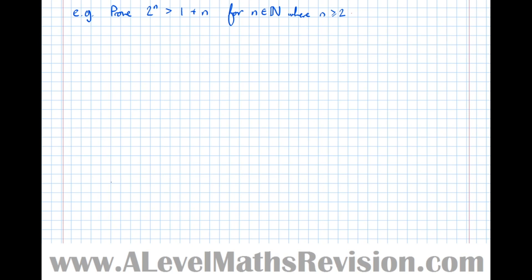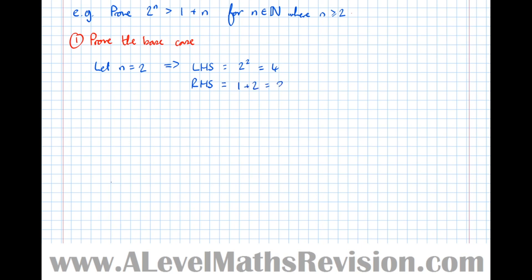Step one: prove the base case. Our base case is n equals 2, since we're being asked to prove this for n greater than or equal to 2. Let n equal 2, which implies the left-hand side equals 2 squared, which is 4. The right-hand side equals 1 plus 2, equals 3. So left-hand side is greater than right-hand side — therefore true for n equals 2.